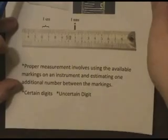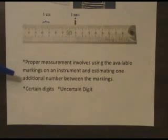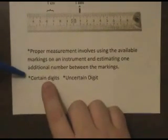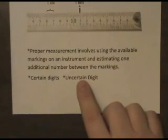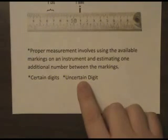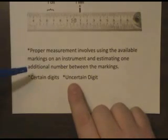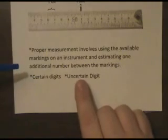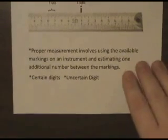Proper measurement always involves using the available markings on the instrument and estimating one additional number between the markings. We call the digits that come from the instrument's markings themselves the certain digits, and the one estimated digit that we tack on to the end we call the uncertain digit. It's the uncertain digit that if you and I make the same measurement, we might disagree by one or two uncertain digits, but we definitely have the certain digits that we both agree on.